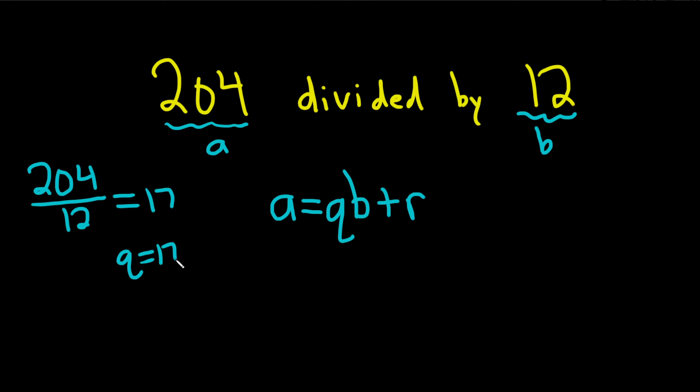Okay, so Q equals 17. No rounding in this case. Normally you round down, but because it's a whole number, you leave it alone.